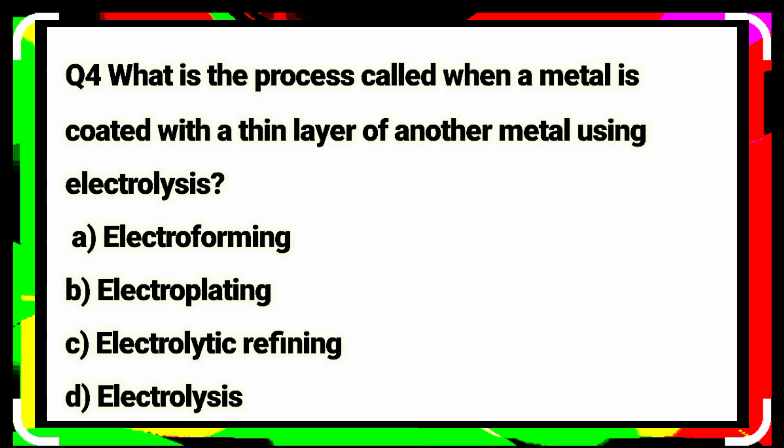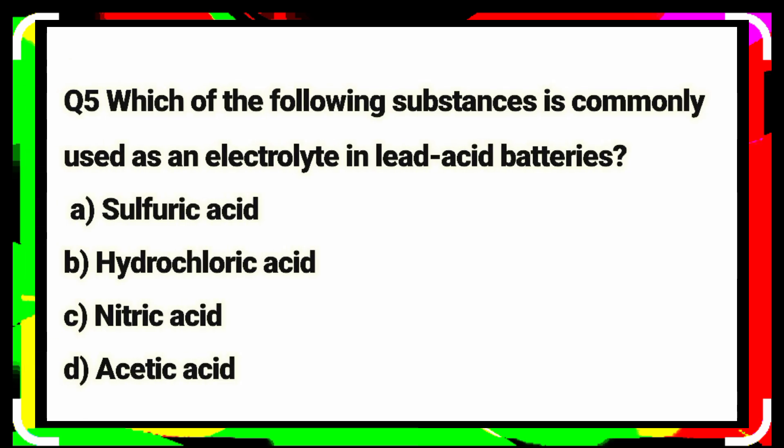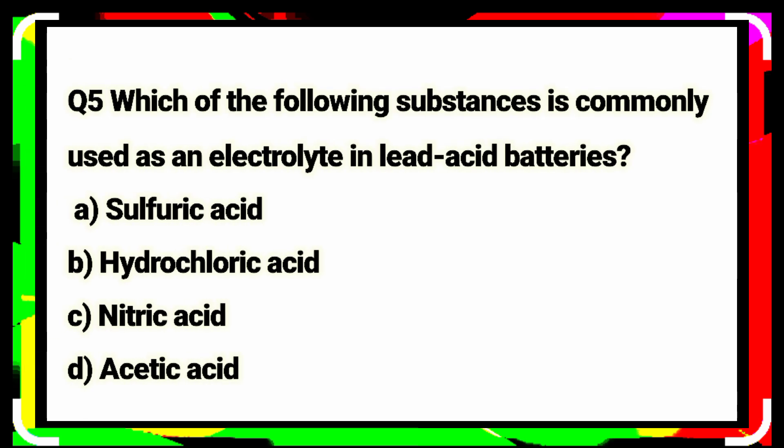Question number four: what is the process called when a metal is coated with a thin layer of another metal using electrolysis? Electroplating. Option B is the correct answer.